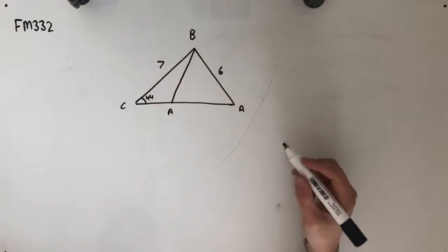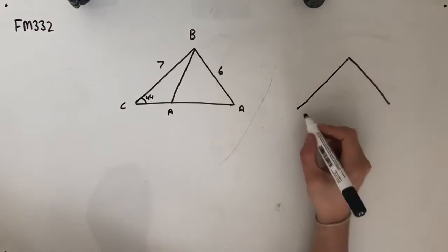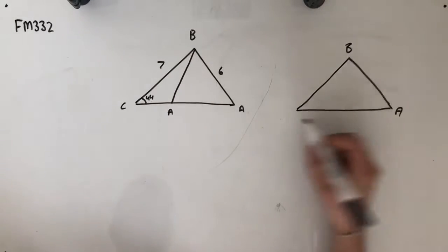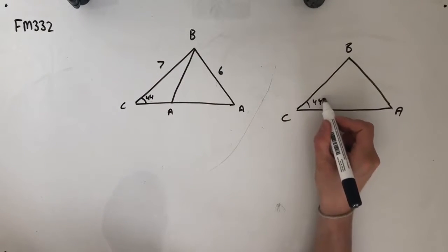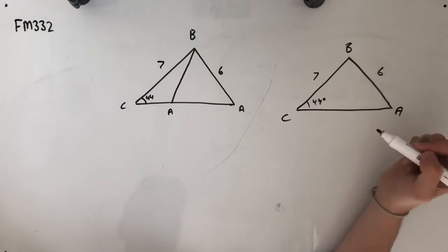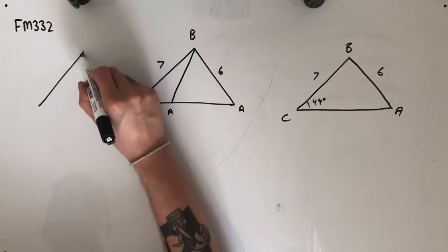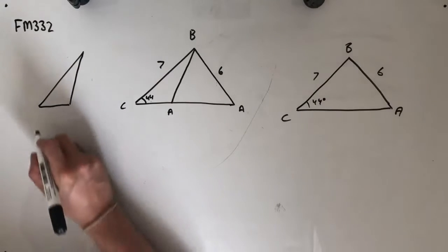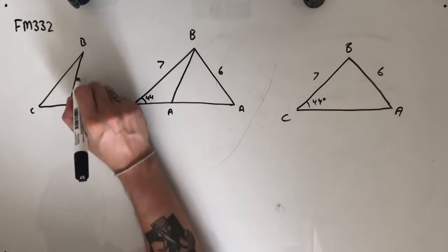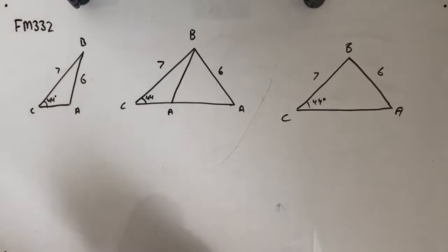Looking at these two different triangles we can do, what I'm going to do is split them up into their two separate triangles. So, I'm going to draw a triangle that looks like this over here. So, we've got B, A, C, this angle 44 degrees, 7 and 6. And over here, I'm going to draw the smaller triangle, C, B, A, and we've got 6, 7 and 44 degrees.